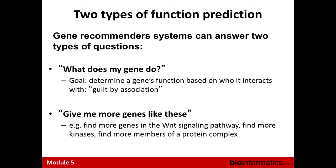This module is about predicting gene function, and there are two computational approaches. The first is to ask: what does my gene do? Here you use the guilt-by-association principle to predict function based on connections to other genes and their known functions. The second is to ask: give me more genes like this list — and this is where the gene recommender system concept comes in. The second type of question is more powerful than the first, because by answering it you also answer the first.